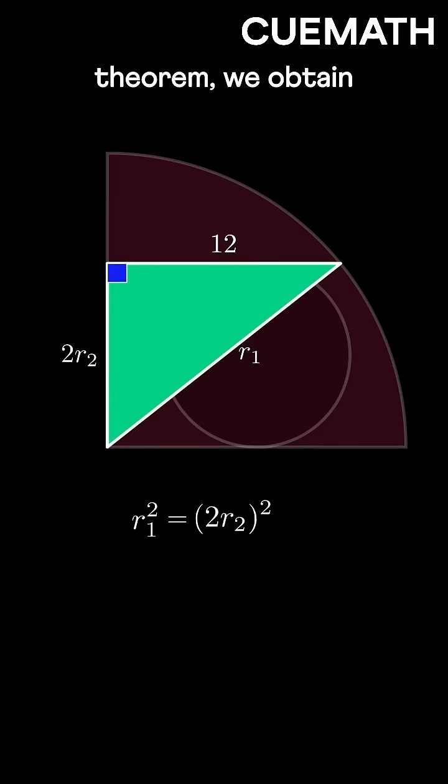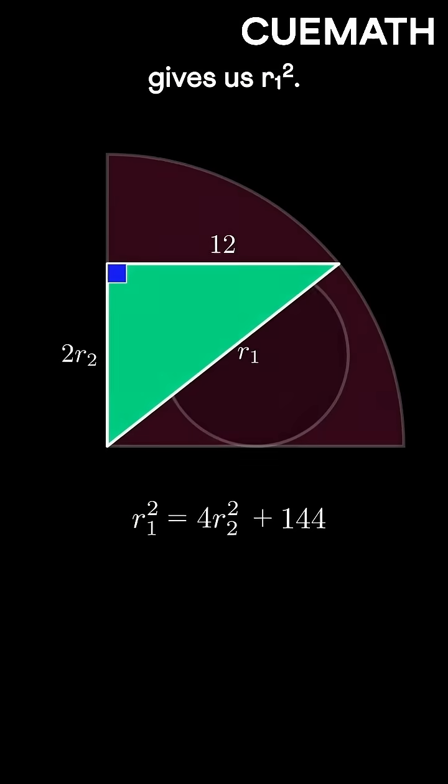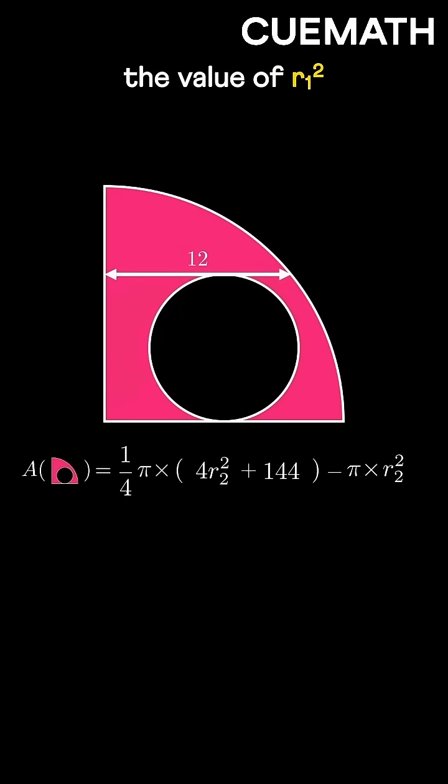Applying the Pythagorean theorem, we obtain an equation that gives us R1 squared. We can substitute the value of R1 squared and simplify.